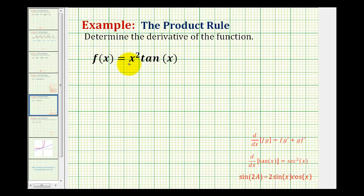We need to recognize this as a product of two differentiable functions. We'll call the first function f, so f is equal to x squared, and we'll call the second function g, so g is equal to tangent x.